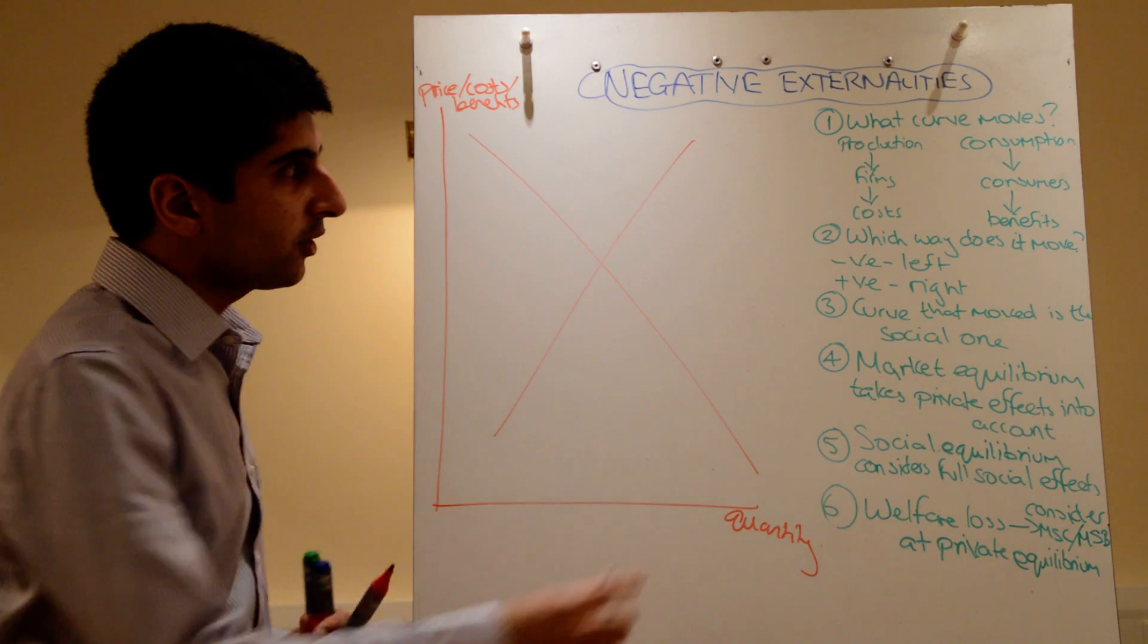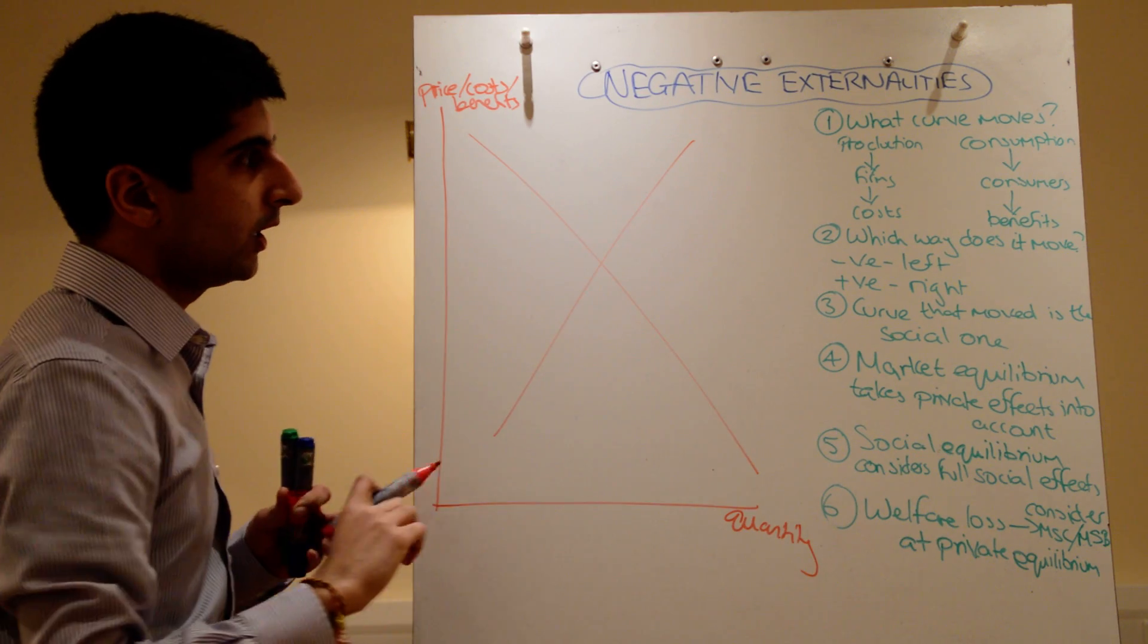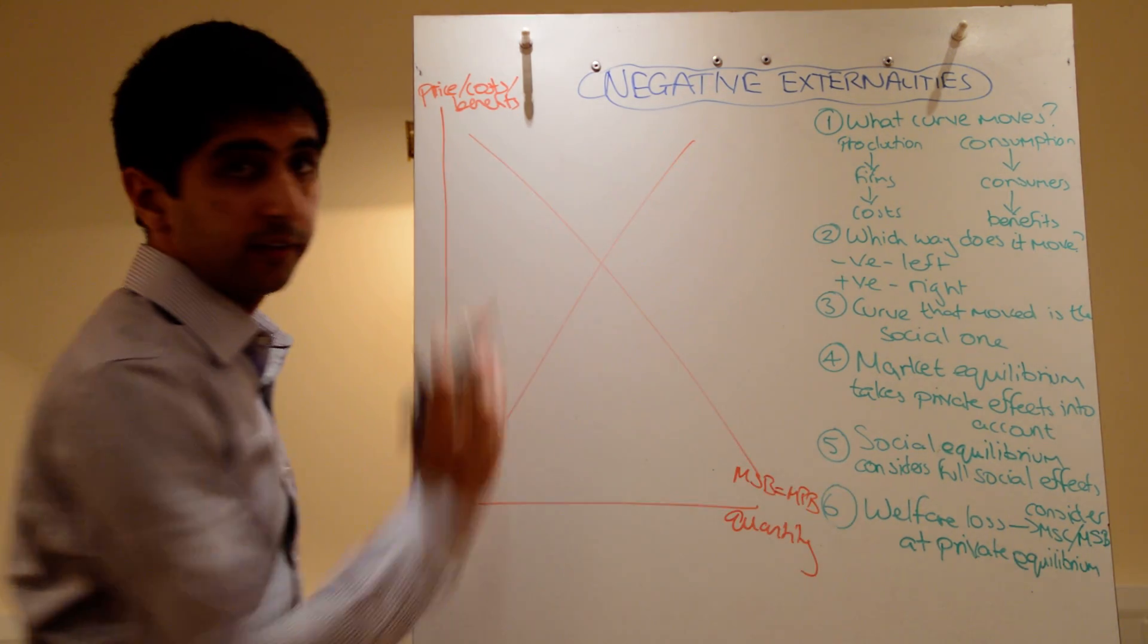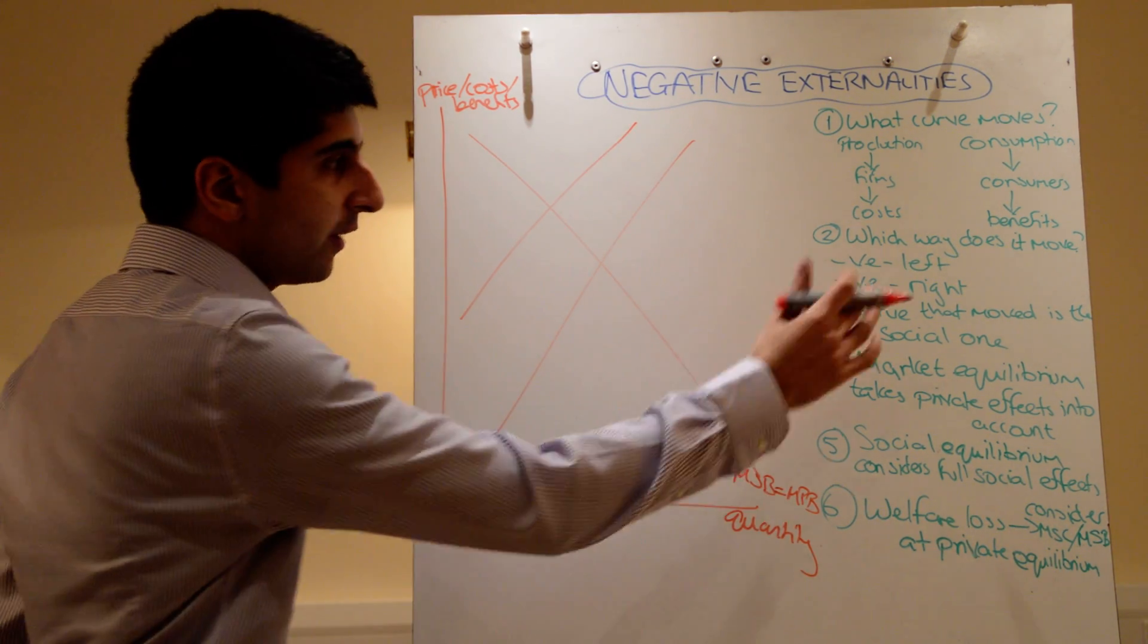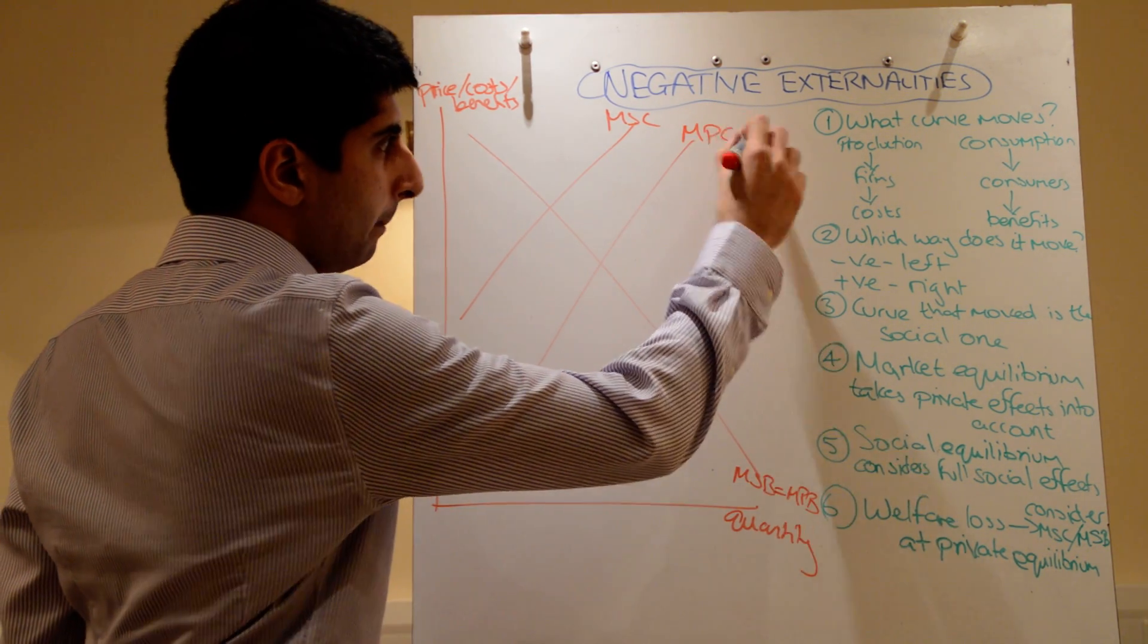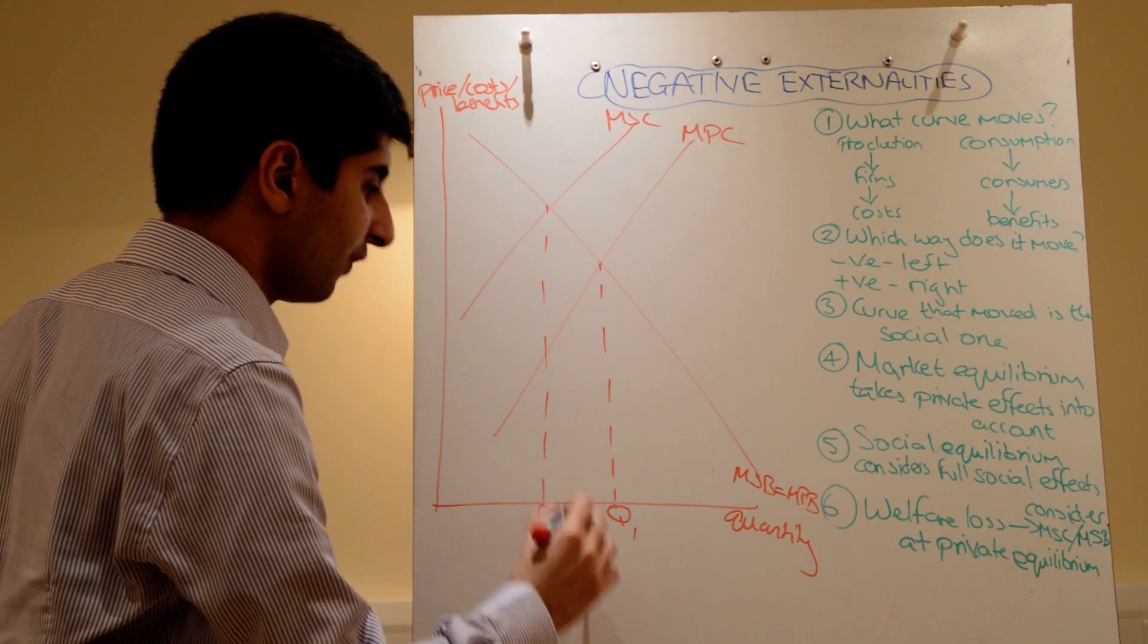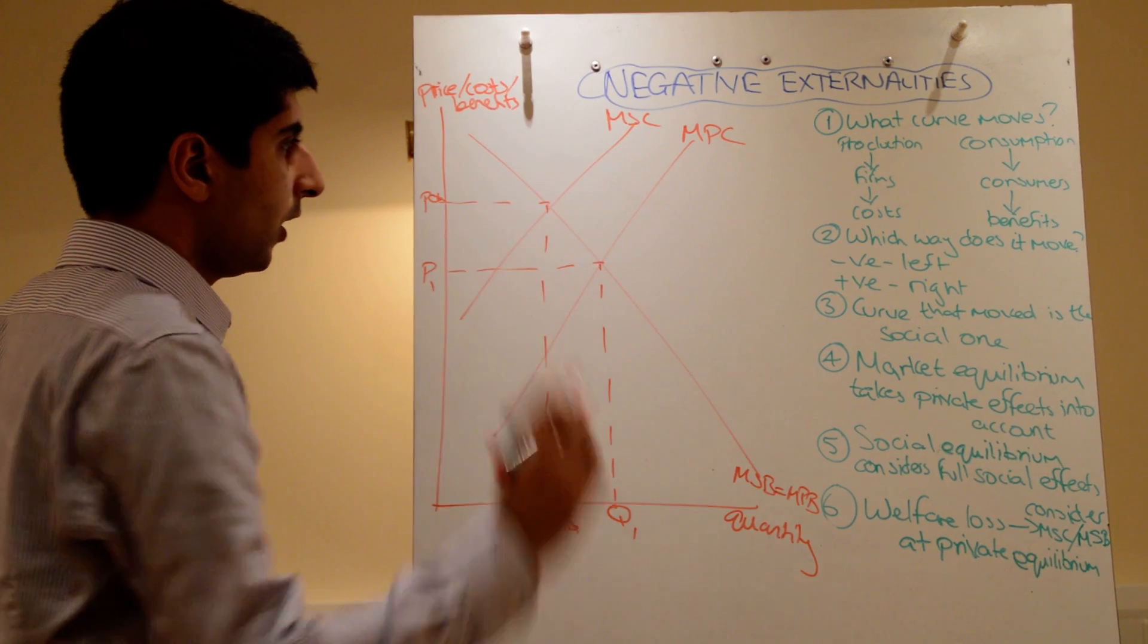Now, a negative externality in production. Which curve moves? Production linked to firms, which is the costs curve, the upward sloping one. Which means we're not moving this one. So let's label that MSB and MPB. That's not moving anywhere. So which way does this curve move? Again, we're working with a negative externality, so it moves left. The curve that we move is the social one. So let's label that MSC. The one that we haven't moved, therefore, is MPC. The private optimum only considers the private costs and benefits. So let's label that Q1. Whereas the social optimum considers the full social effects.